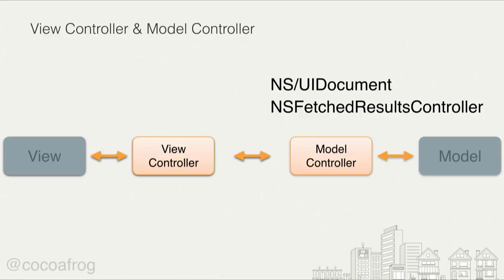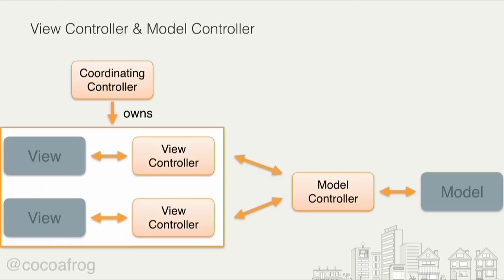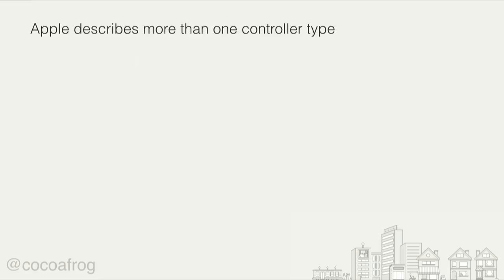We can go further: we have a view, a model controller, maybe a second view controller talking to the same model controller, and then a coordinating controller managing those view controllers. This diagram is perfectly fine MVC — you can do that, and it's recommended. So Apple describes mediating controllers, coordinating controllers, model controllers, and view controllers. And you may be familiar with container view controllers too.